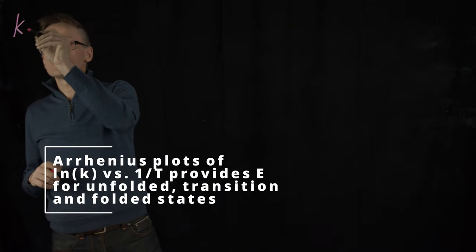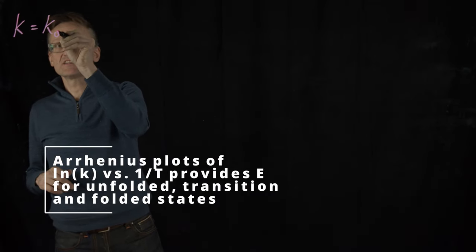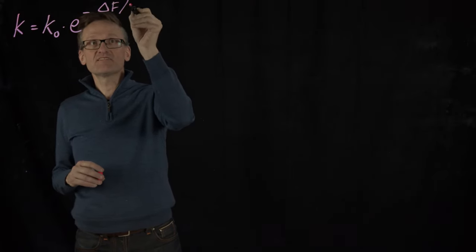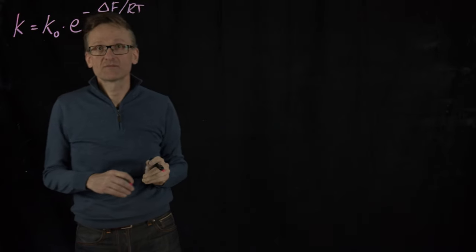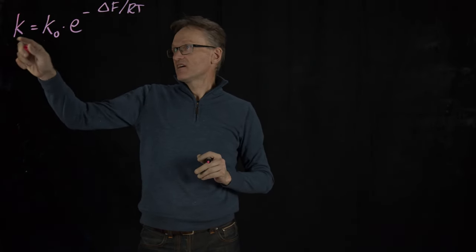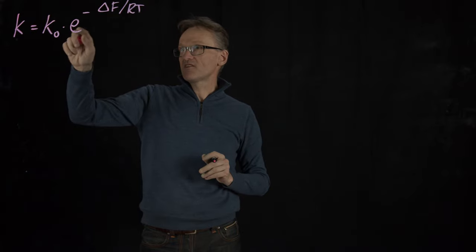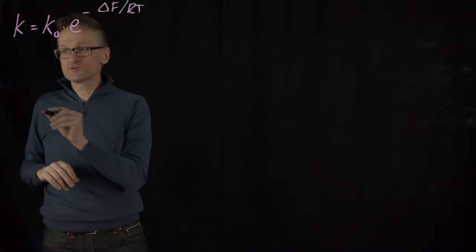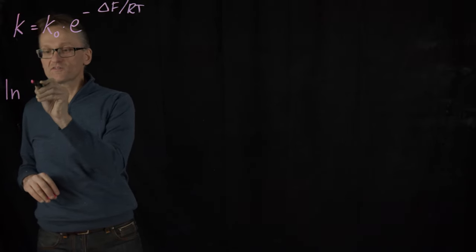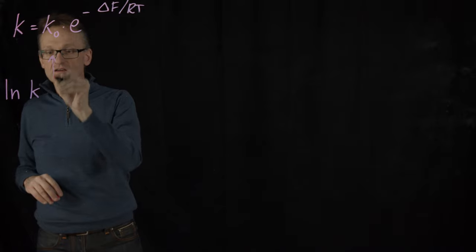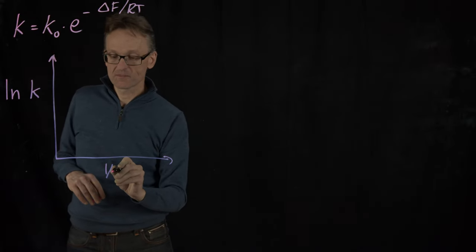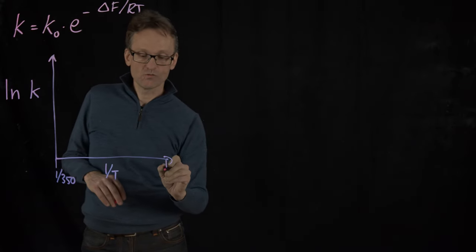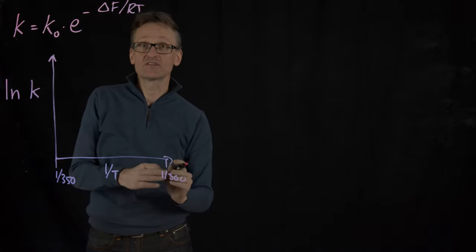So the reaction rate k was equal to k₀ multiplied by e raised to delta F divided by RT. With the exponent here and 1 over T in the exponent, it's going to be quite useful to plot the logarithm of k versus 1 over T, and that might go from say 1 over 350 kelvin to 1 over 300 kelvin.